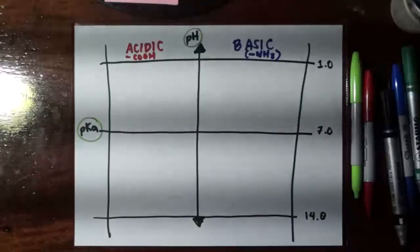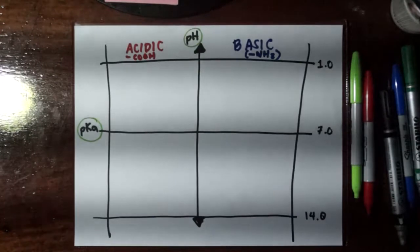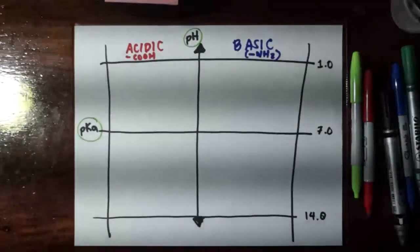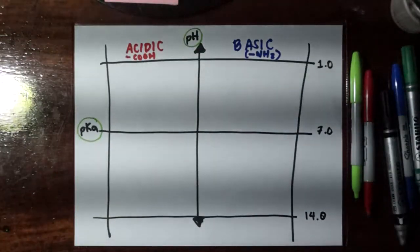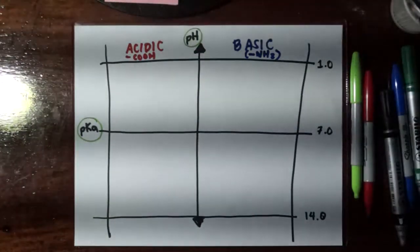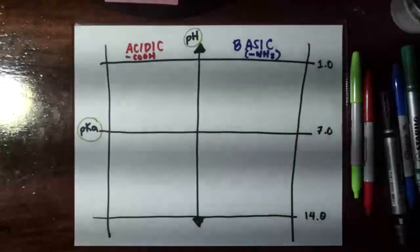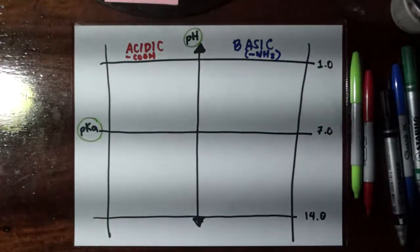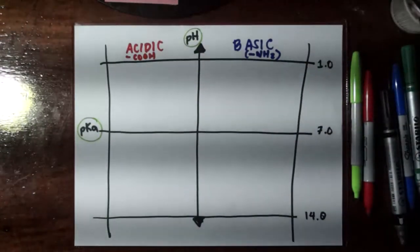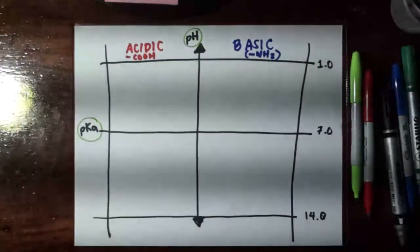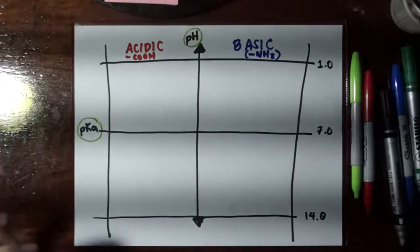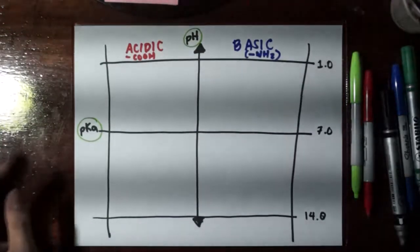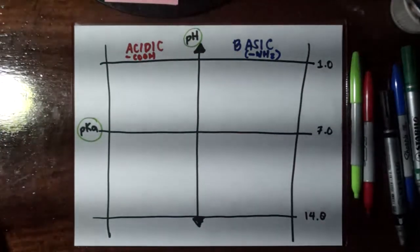Now we're going to proceed with the discussion of a particular property of amino acids, which is their charge. That is the way that we classify them, based on the capability for their R groups to elicit a charge or not.